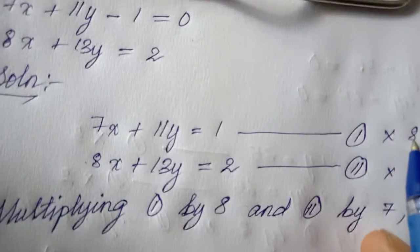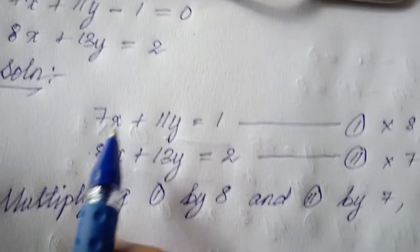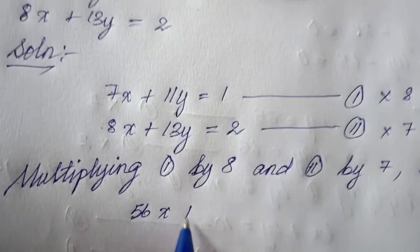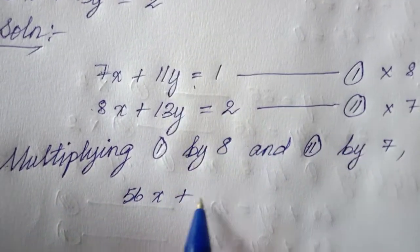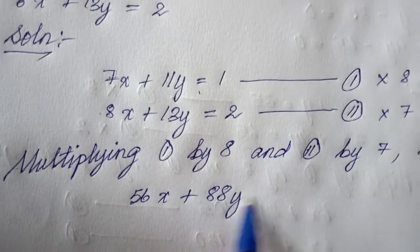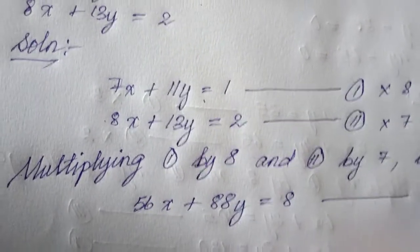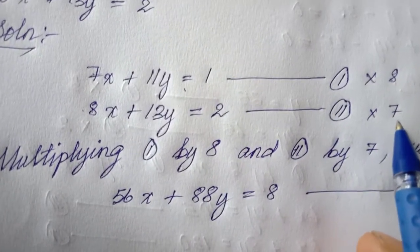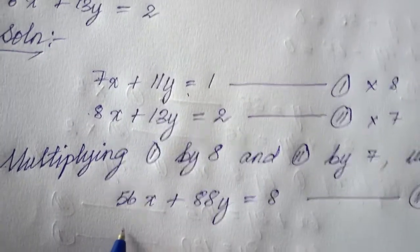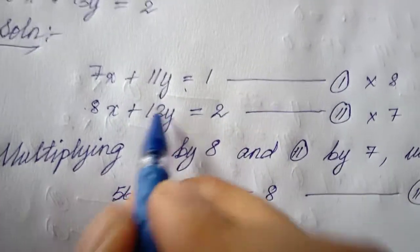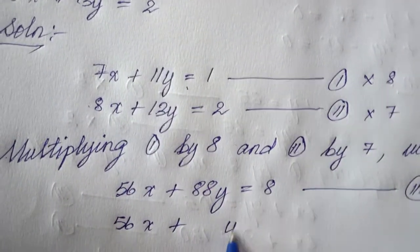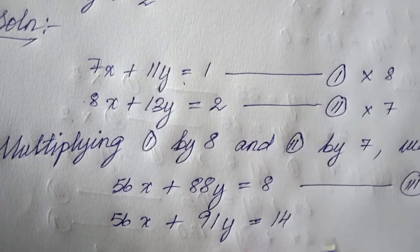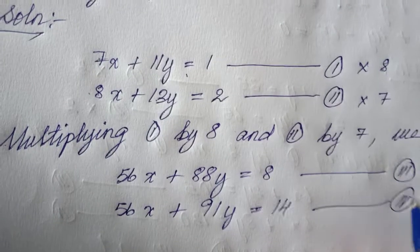Multiplying equation 1 by 8: 8 times 7 is 56x, 8 times 11 is 88y, and 8 times 1 is 8 — this becomes equation 3. Multiplying equation 2 by 7: 7 times 8 is 56x, 7 times 13 is 91y, and 7 times 2 is 14 — this becomes equation 4.